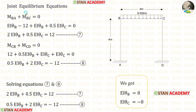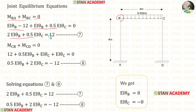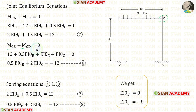Now let us make the joint equilibrium equations. At joint B, M_BA plus M_BC equals 0. From the slope deflection equations, let us apply the expressions for M_BA and M_BC, add them, and keep the numerical terms on the right side. Let us call this equation number 7. At joint C, M_CB plus M_CD equals 0. Applying expressions for M_CB and M_CD and keeping numericals on the right side gives us equation number 8.